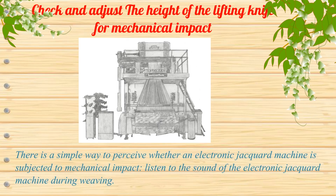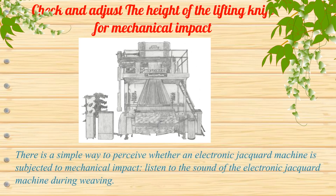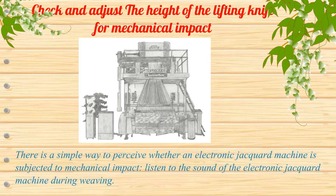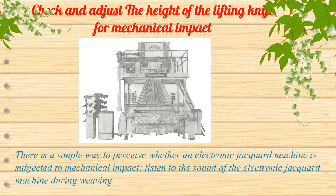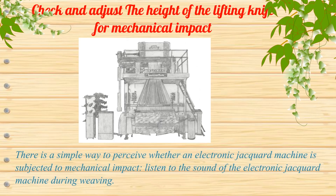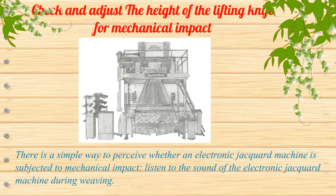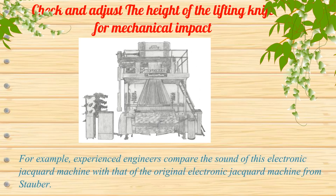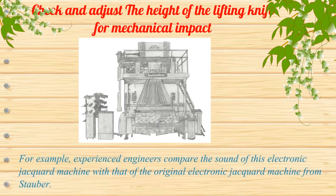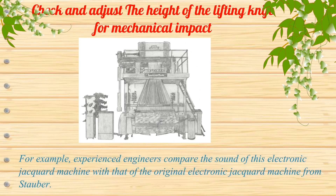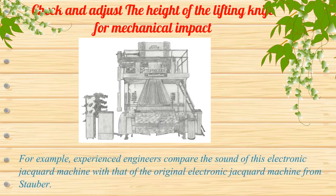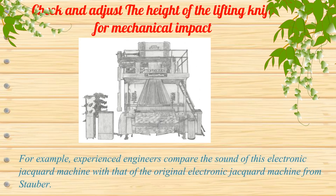There is a simple way to perceive whether an electronic jacquard machine is subjected to mechanical impact: listen to the sound of the machine during weaving. For example, experienced engineers compare the sound of the machine with that of the original electronic jacquard machine from Stauber.